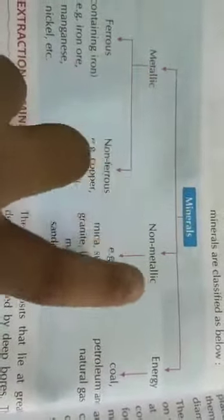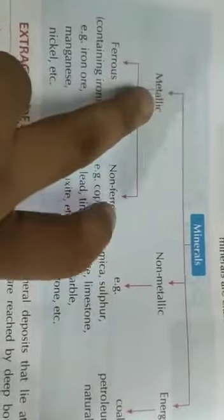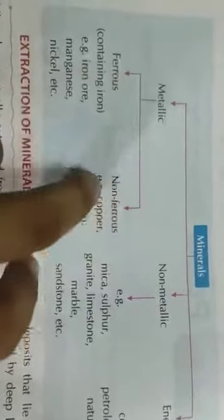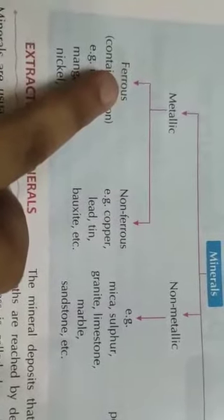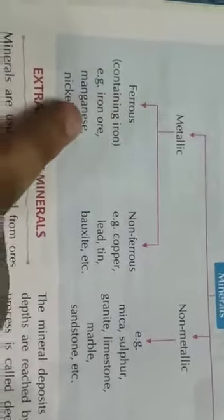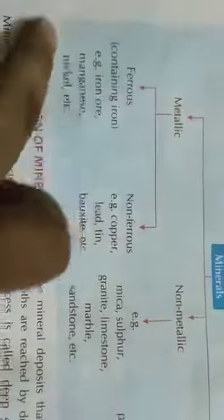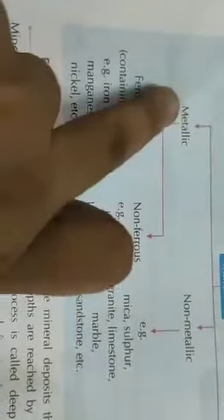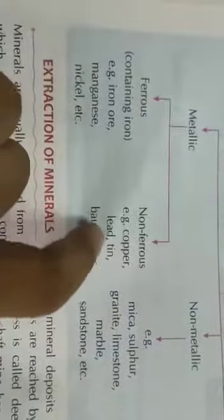Metallic and non-metallic minerals have different properties. Under metallic minerals, there are two types: ferrous and non-ferrous. The word ferrous means these minerals contain iron — like iron, manganese, nickel, etc. These are called ferrous minerals. Non-ferrous minerals don't contain iron; they include copper, lead, tin, and bauxite, among others.